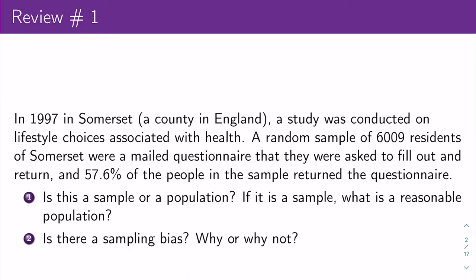Let's think about whether this is a sample or a population. Whenever you're given a problem like this, you should return back to the text and look for words like 'sample,' 'population,' or the word 'all' — those will be clues. In this case, we see it says 'a random sample of 6,009 residents of Somerset,' so we know this is a sample.